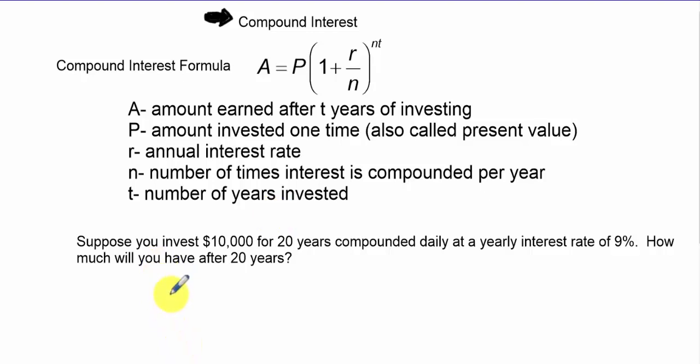Let's do the first problem. Suppose you've got ten thousand dollars to invest for twenty years and your interest rate is nine percent. So that's 1 plus 0.09 over 365, it's compounded daily, and we're doing that over twenty years. This is a straight plug-and-chug situation. Plug that into your calculator and see what you get.